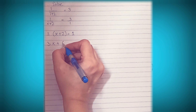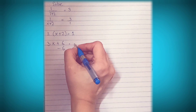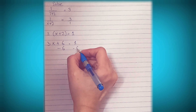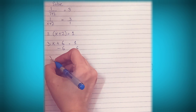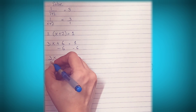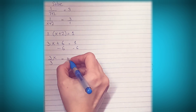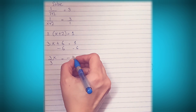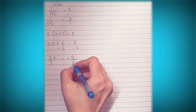Then we distribute this 3 inside the parenthesis. So we have 3x plus 6 is equal to 1. Now we solve for x — we subtract 6 from both sides. So we have 3x is equal to 1 minus 6, which is negative 5.